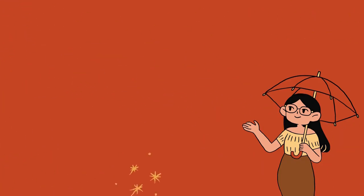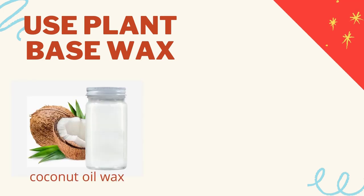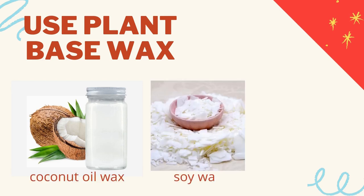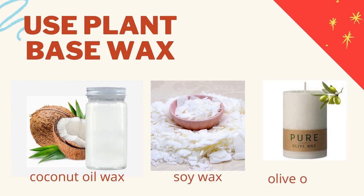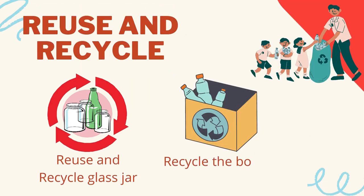Mitigation measures — Use plant-based wax: There are many alternatives to substitute paraffin wax as candle wax that can help reduce the usage of fossil fuel, such as coconut oil wax, soy wax, and olive oil wax, because they can be used in a more sustainable way. Reuse and recycle: The practice of reuse and recycle in daily life can help in terms of the impact of the end-of-life product — by reusing the glass jar as another container such as a food container, and recycling box material to produce new material such as paper.